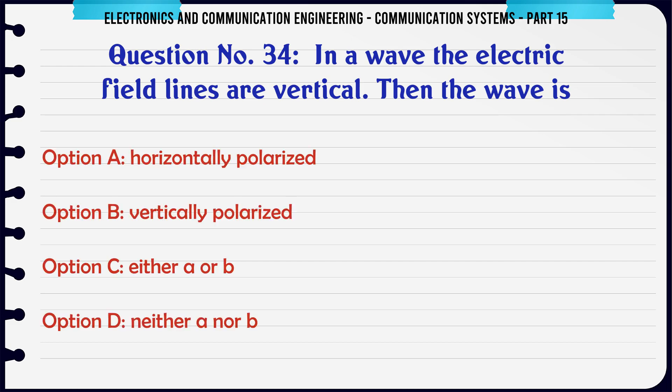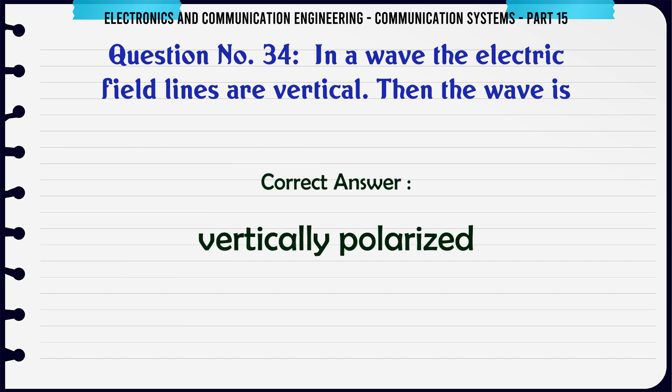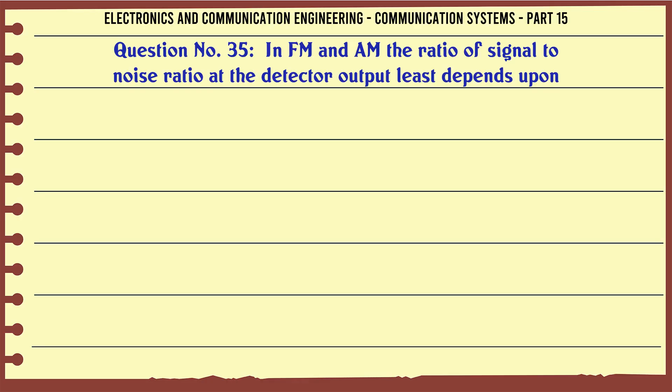In a wave the electric field lines are vertical. Then the wave is: A horizontally polarized, B vertically polarized, C either A or B, D neither A nor B. The correct answer is vertically polarized.